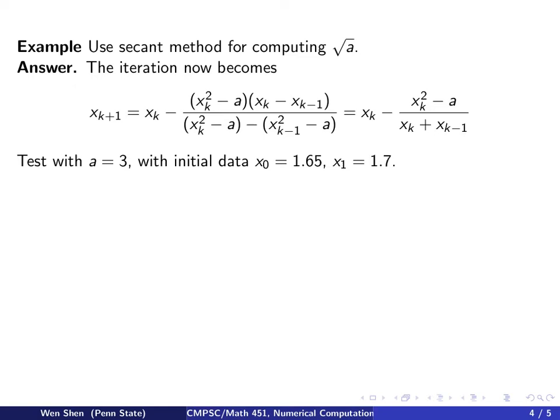We're going to test this with a equal to 3. So we choose initial data, similar to Newton's method. Let's say x0 is 1.65 and x1 is 1.7, so they are good initial guesses.